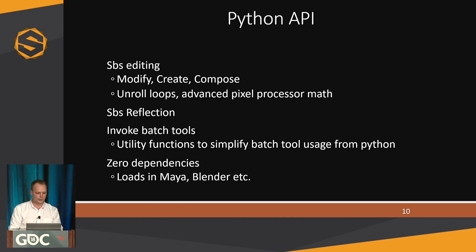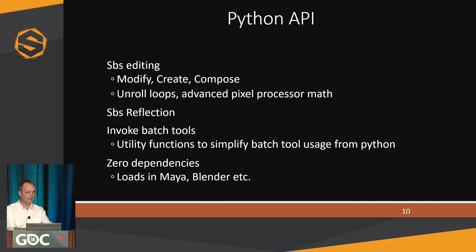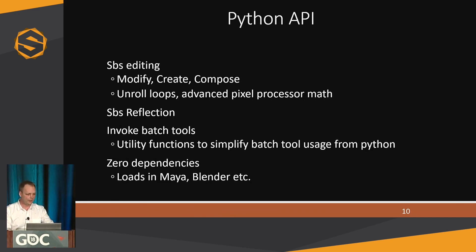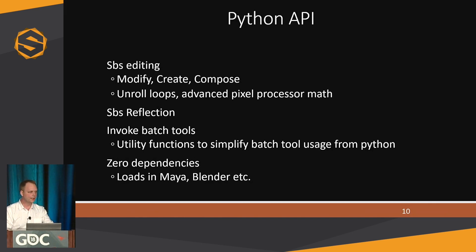It also allows you to reflect your Substance files — you can know exactly what parameters they have, what the ranges are for all the parameters, and all the Substance files that a certain file depends on. It also contains Python functions to call our batch tools, so rather than manually generating command lines, you can use our Python calls to invoke them. Finally, it's a completely standalone Substance Python library, which allows you to load it in any Python environment — Maya, Blender, Houdini — without causing any problems.